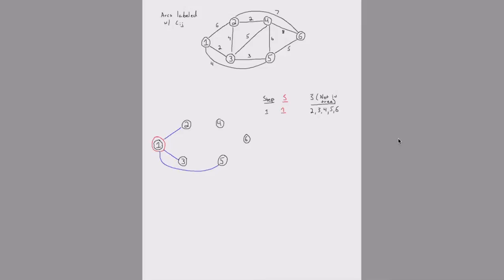Looking at the cost data, arc 1-3 has a cost of 2 — it's the cheapest. So we're going to include arc 1-3 in the MST, and node 3 gets included in our set S.